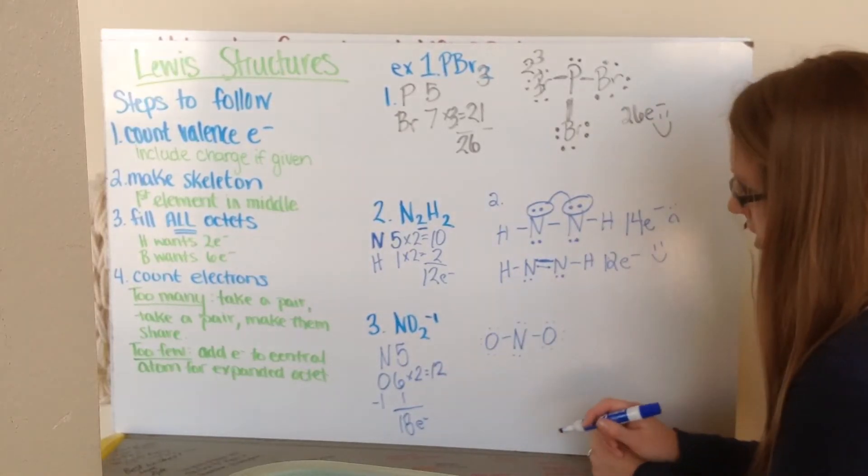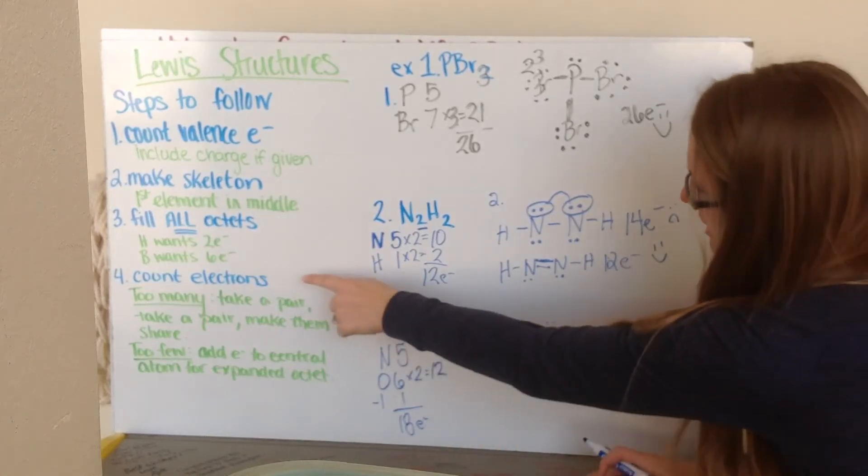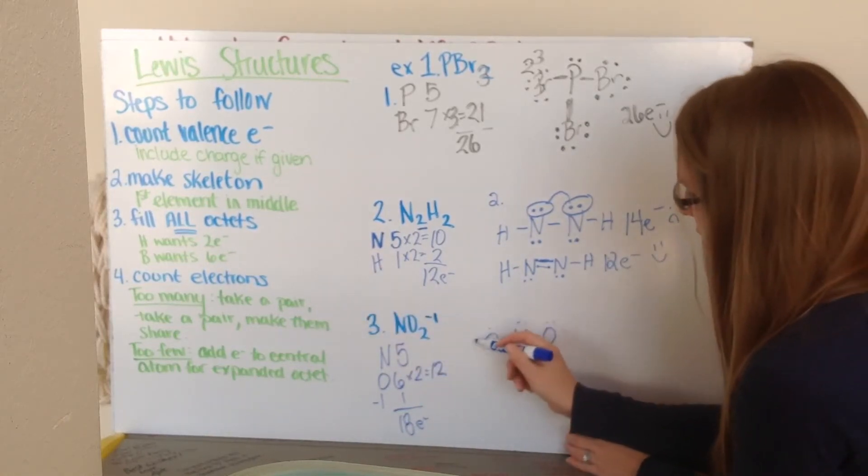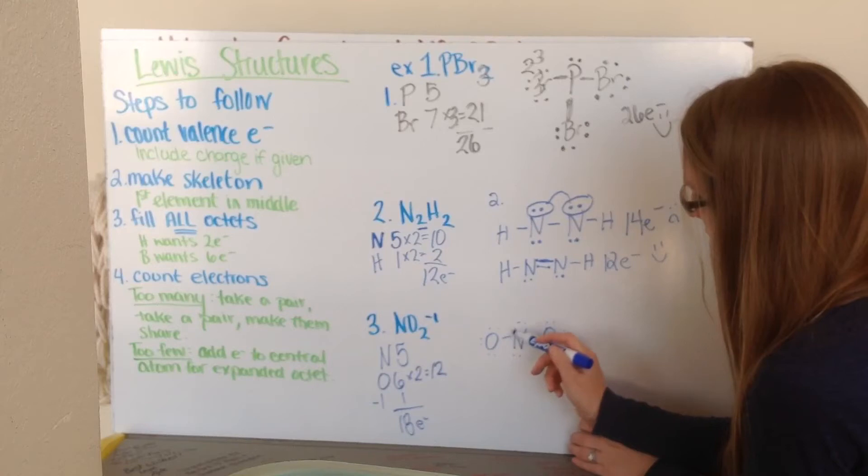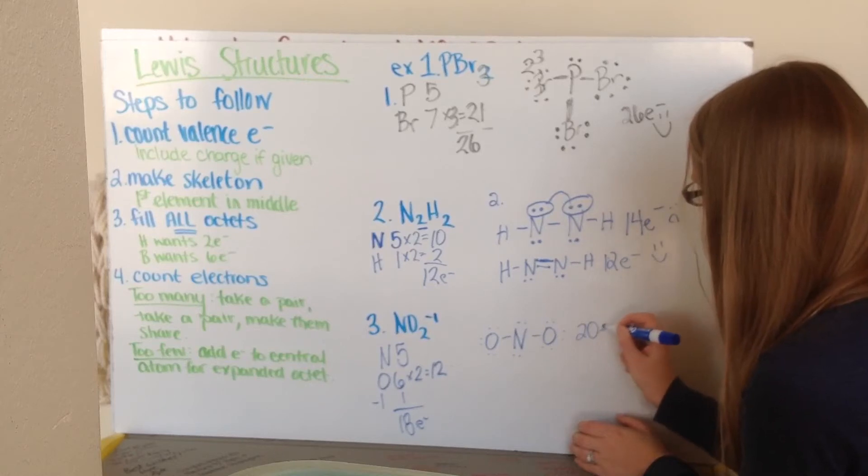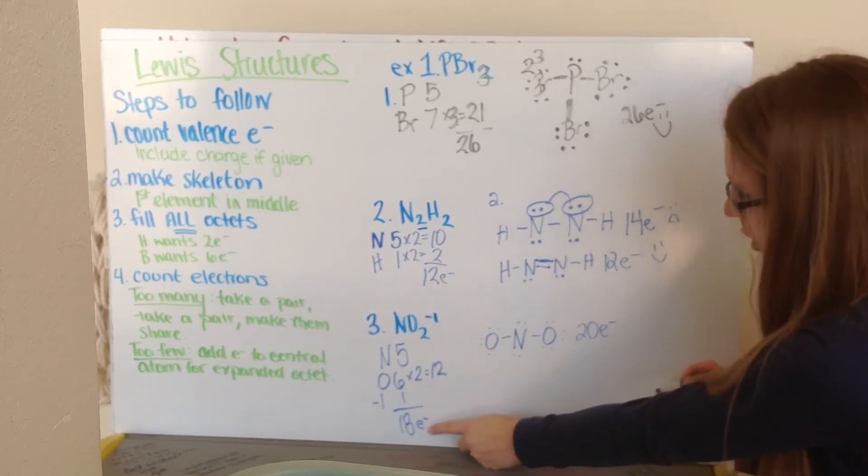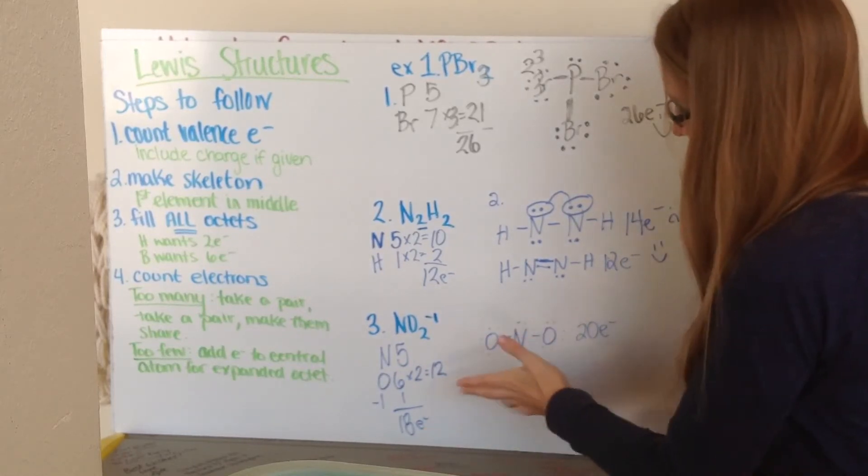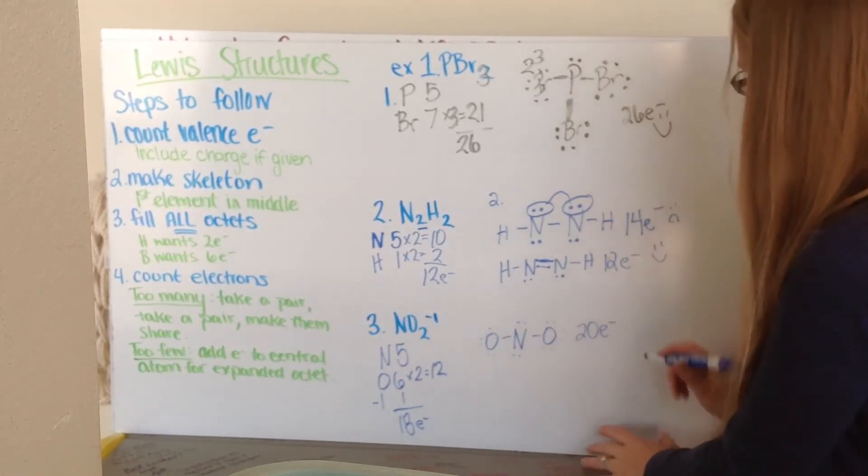And I go ahead and then I count my number of electrons. 2, 4, 6, 8, 10, 12, 14, 16, 18, 20. 20 electrons. And I look back and I can only have 18. I can't use all 20 because they don't really exist. I have too many here.